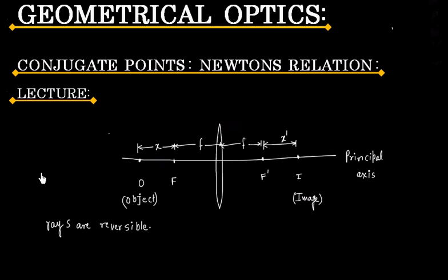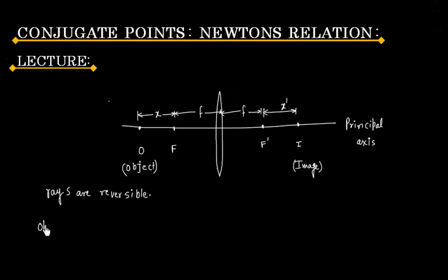So point O and I, that is object and image, are interchangeable. Object and image are interchangeable.